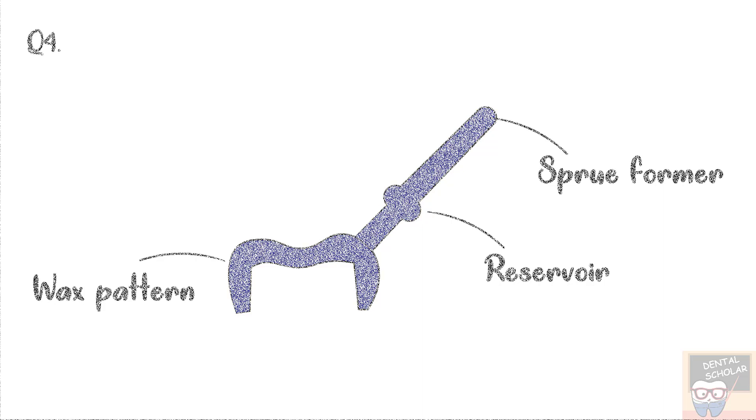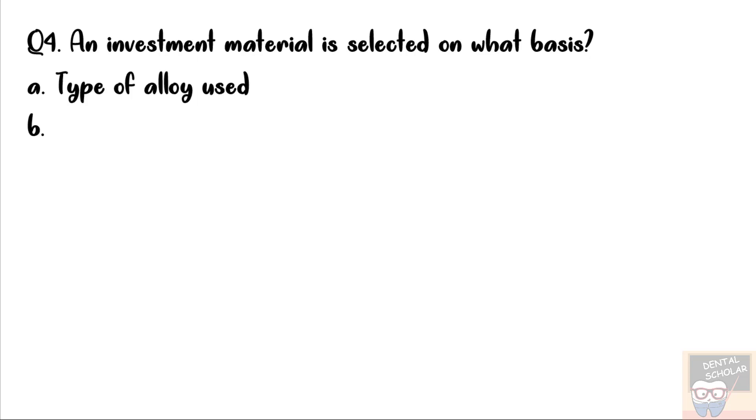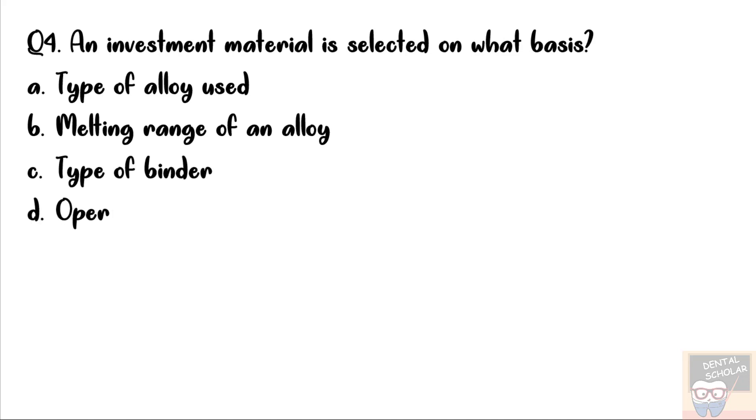Let's now go to question number 4. An investment material is selected on what basis? Option A, type of alloy used. Option B, melting range of an alloy. Option C, type of binder. And option D, operator preference.